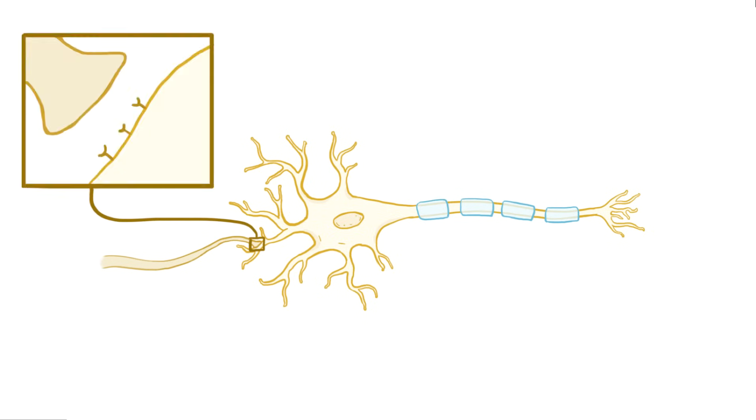Those dendrites receive signals from other neurons via neurotransmitters, which when they bind to receptors on the dendrite, act as a chemical signal. That binding opens ion channels that allow charged ions to flow in and out of the cell, converting the chemical signal into an electrical signal.